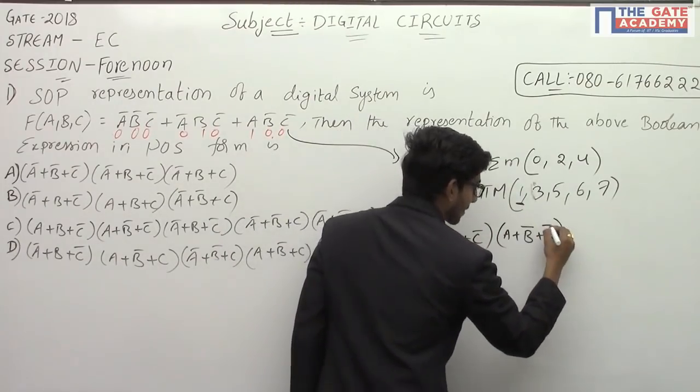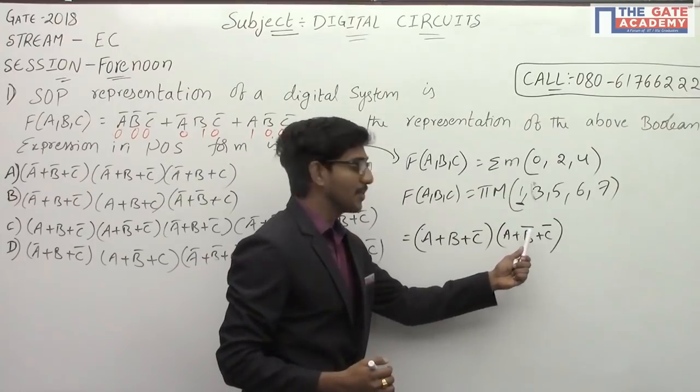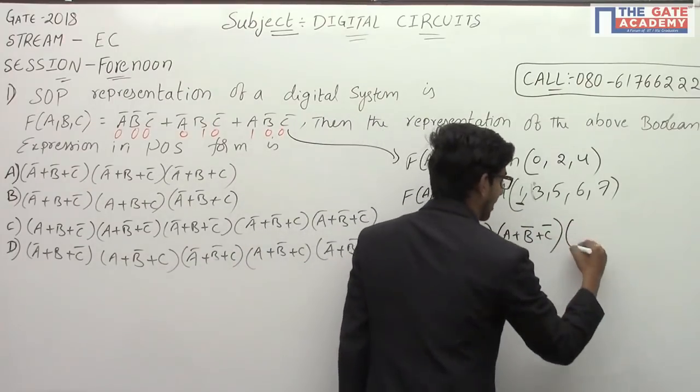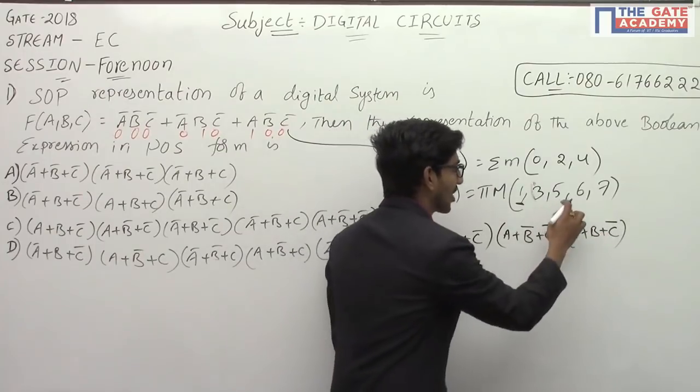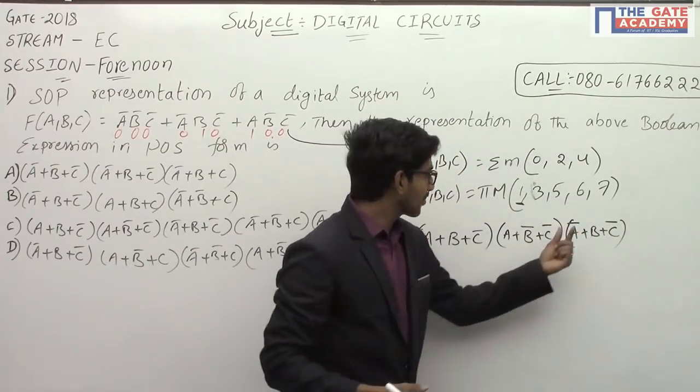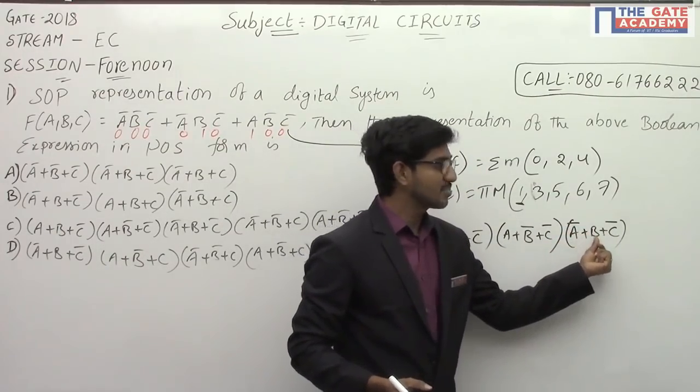Next, for 3: A + B̅ + C̅. For 5: A̅ + B + C̅, because 5 means 1,0,1, we represent it as A̅ + B + C̅.